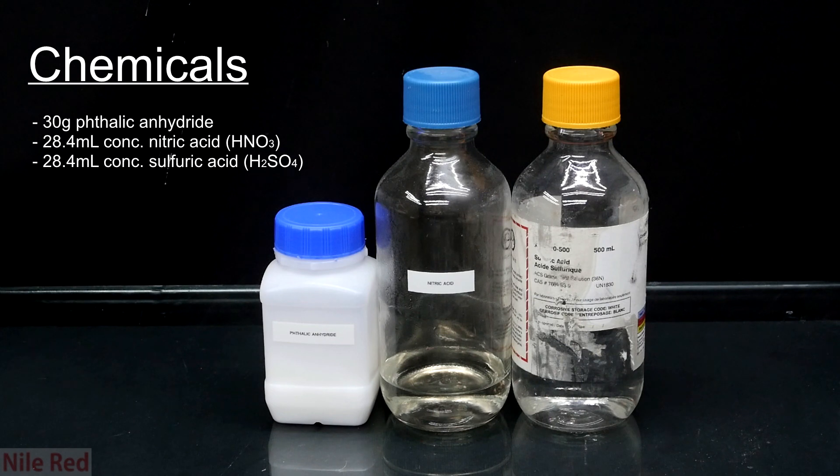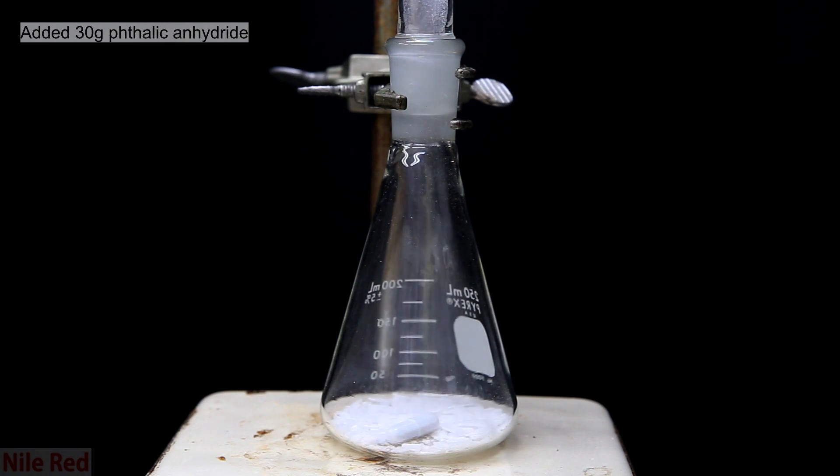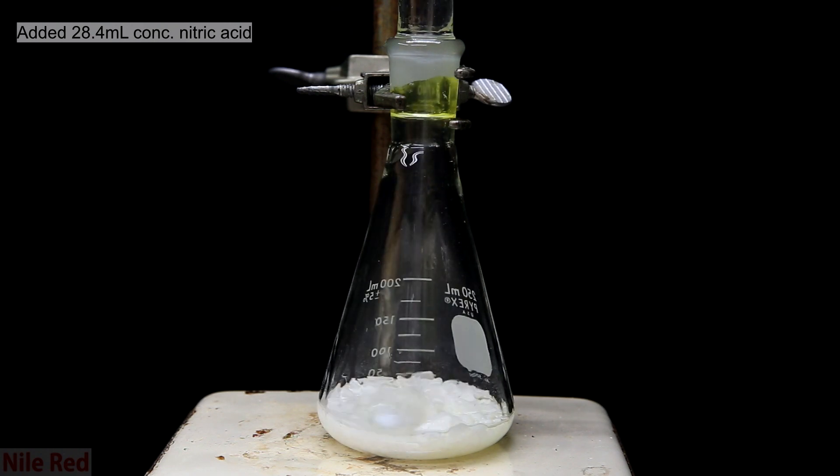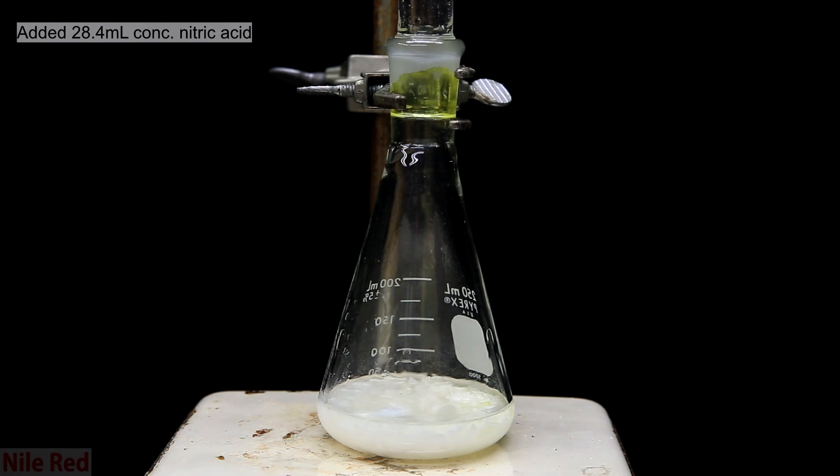Anyway, now we know what we need to do it, so let's get started. To an Erlenmeyer flask, I add in 30 grams of phthalic anhydride. I start stirring using a magnetic stir bar and I add in 28.4 milliliters of concentrated nitric acid.